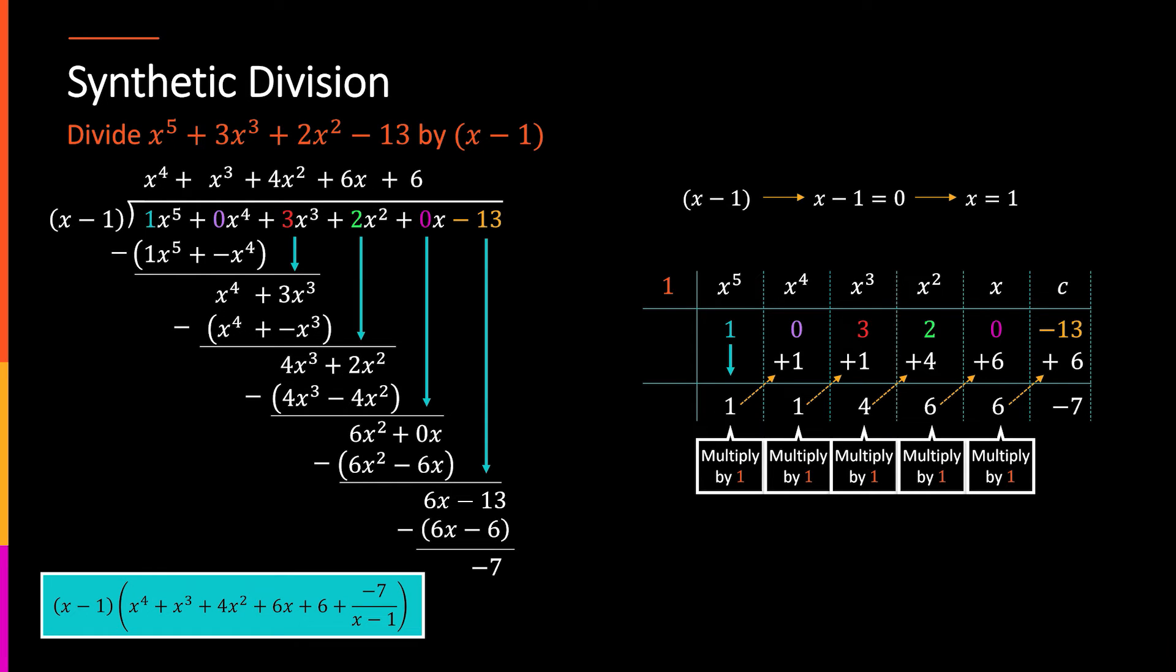Now I have effectively completed the process, although it doesn't necessarily look like it. So looking at this, getting rid of the little instruction there, what I've managed to do is pull out, as it turns out, the coefficients for my new function, where each of these columns, I'm going to write one smaller of a power. So here I have x to the fifth, so underneath I'm going to do x to the fourth. So that one corresponds to one x to the fourth. The next one, one x to the third, four x squared, six x, six, and then that negative seven is actually a remainder - negative seven over x minus one.